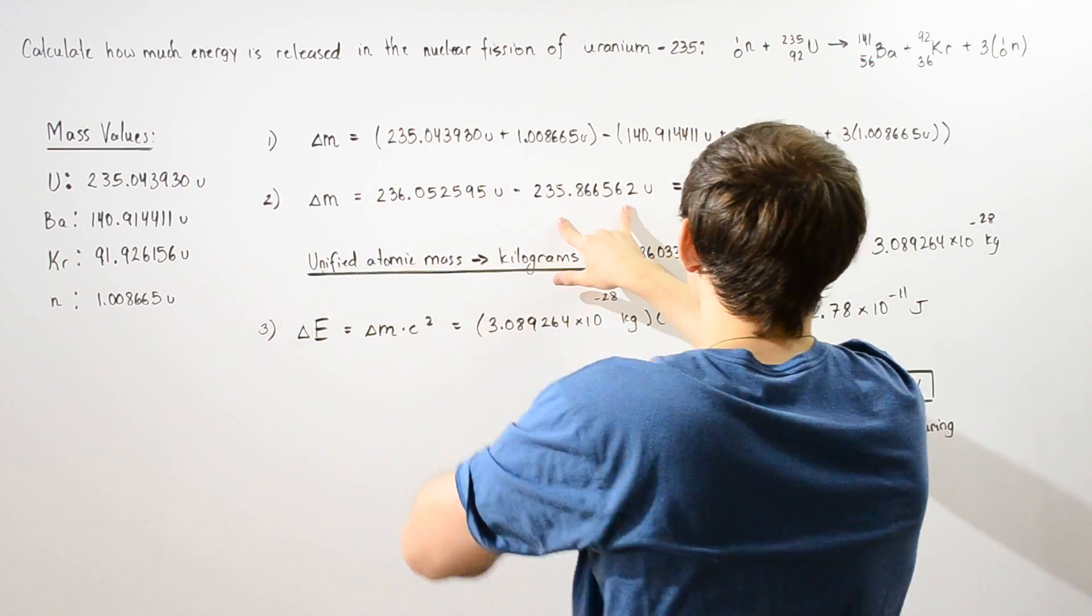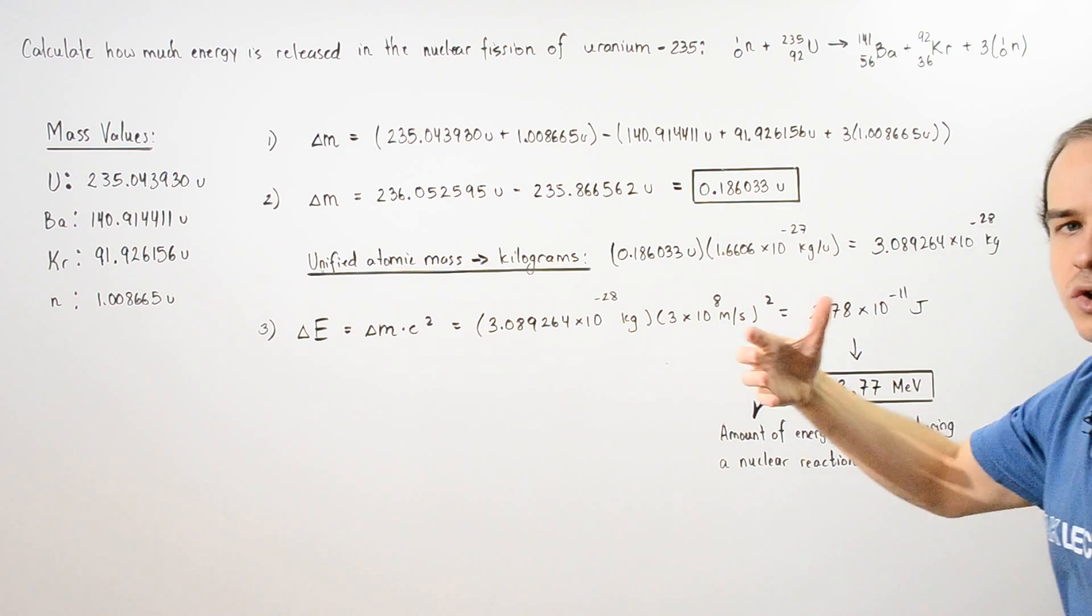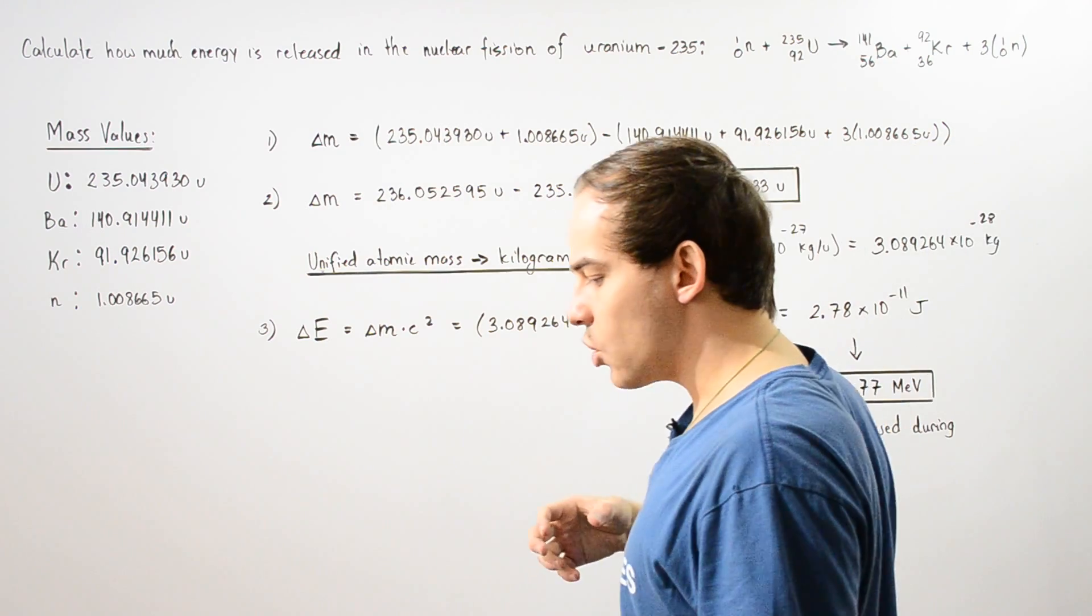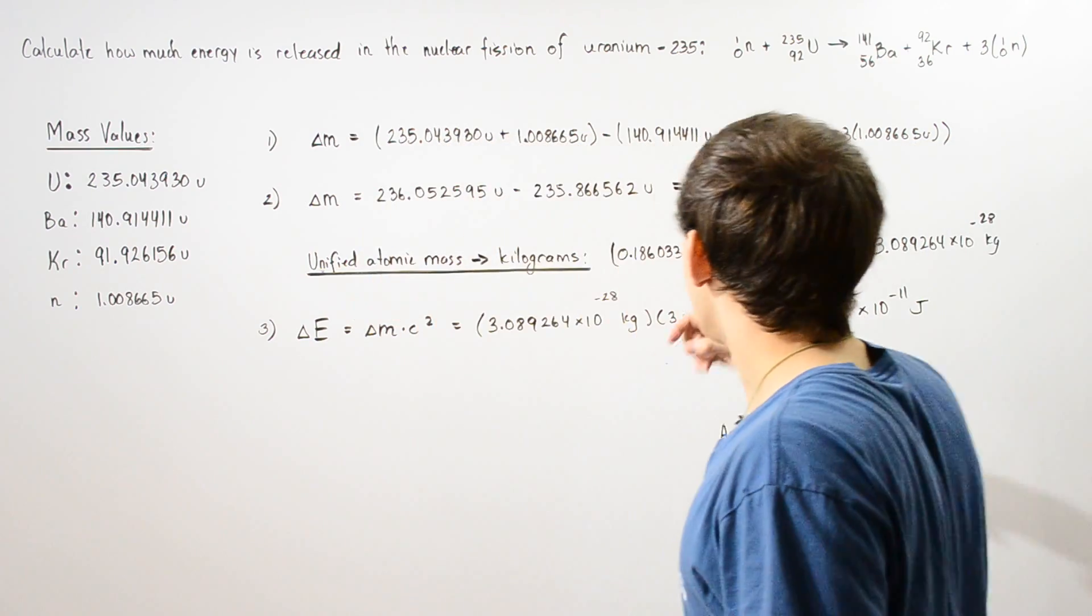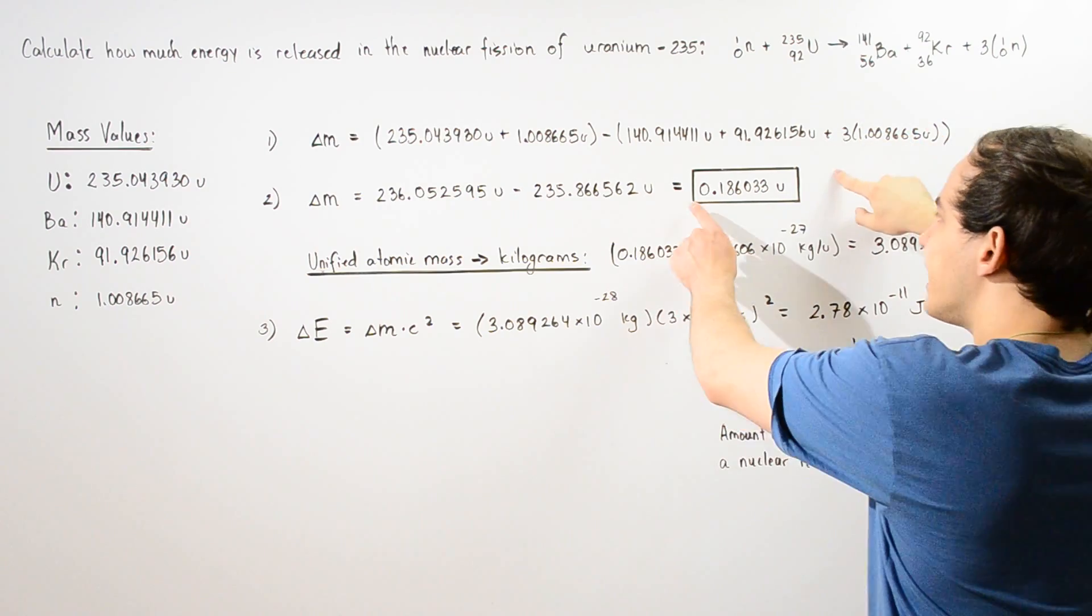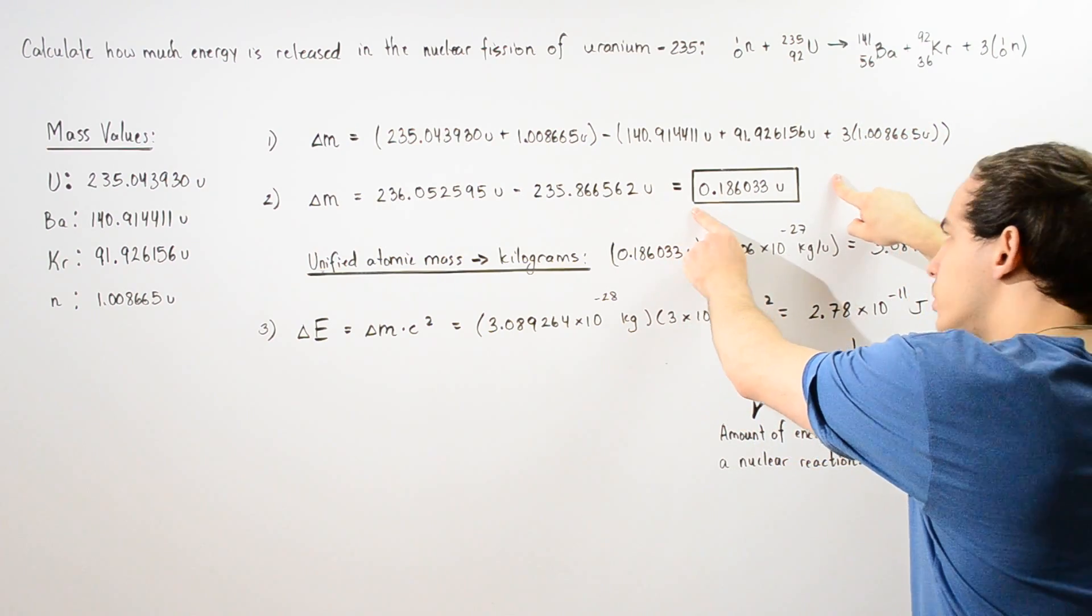And now we subtract the two, and this gives us the decrease in mass. So when we go from the reactant side to the product side, this is by how much our mass decreases.